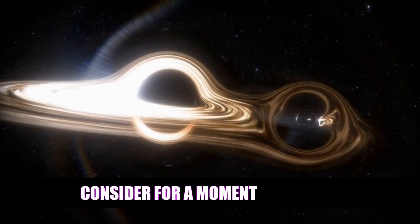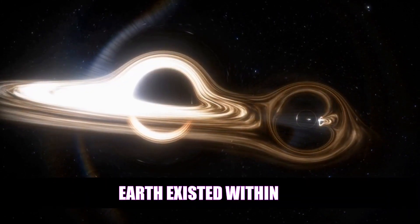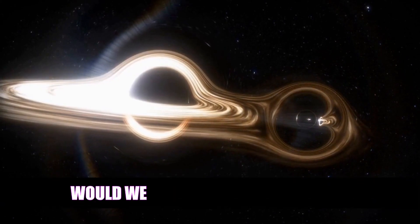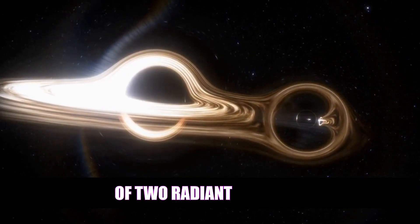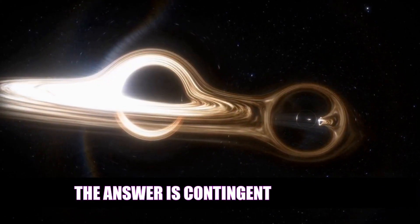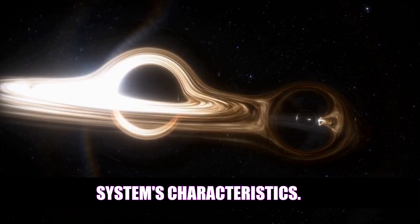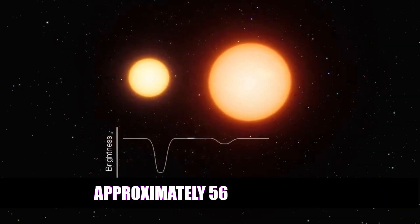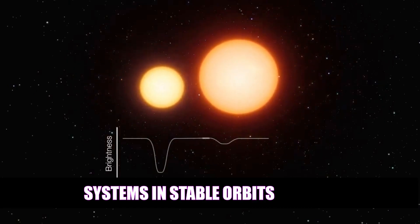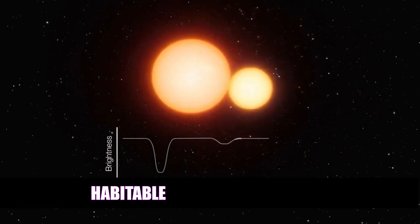Consider for a moment: What if Earth existed within a binary system? Would we witness the splendor of two radiant suns? The answer is contingent on the system's characteristics. Approximately 50-60% of binary systems in stable orbits have the potential to support habitable planets.